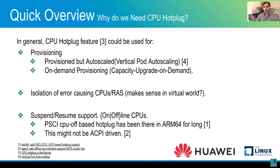CPU hot plug can also be used to isolate error-causing or offending CPUs within the system to stop the propagation of errors, though this may not make as much sense in the virtual world. Another reason is for onlining and offlining CPUs for suspend/resume. This kind of support has been in ARM64-based systems for quite a long time and is based on PSCI calls and CPU-off-based hot plug. You can see this support as part of existing kernel changes.